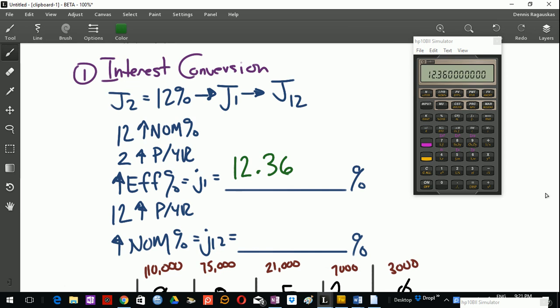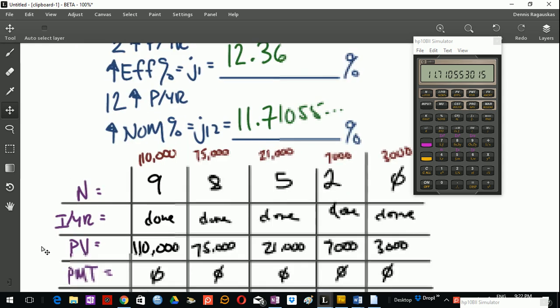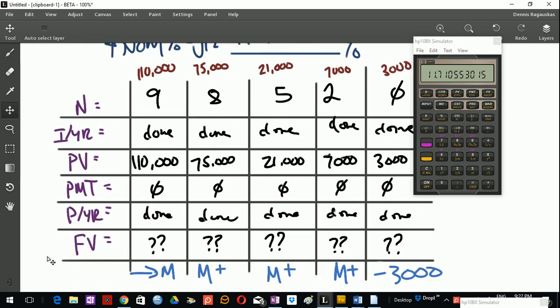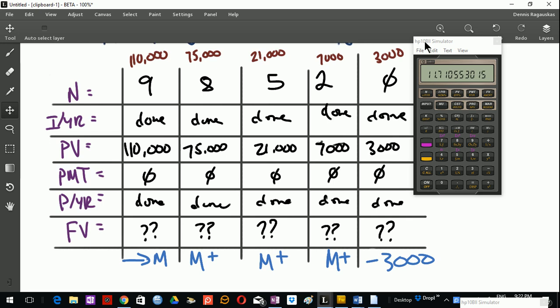So now we have to convert that J1 to a J12 rate. So we'll go 12, shift, PYR, shift, NOM, and so we get J12 equals 11.71055%. So we've converted our rate from a J2 rate, found the equivalent J12 rate. And so once we've done that, we can move on to step two and do all the individual future value calculations here.